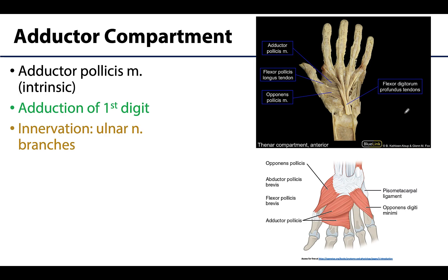The adductor compartment is relatively simple — there is only one muscle, and the compartment name tells you exactly what it does: it adducts, specifically adducting the first digit. It is a large muscle that sits slightly deeper, though a little bit of it is visible superficially.